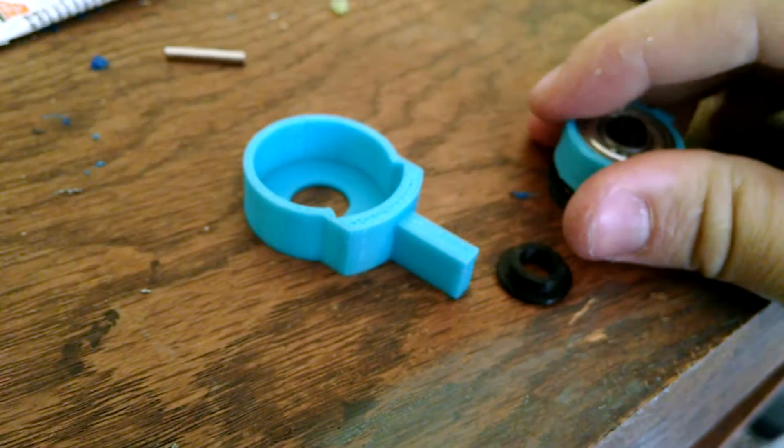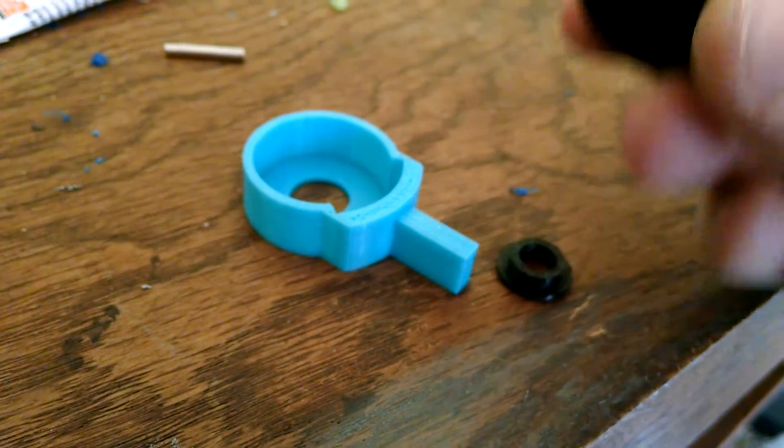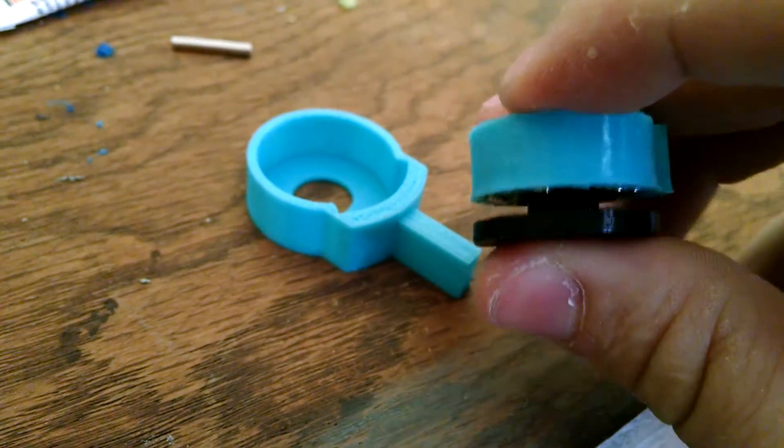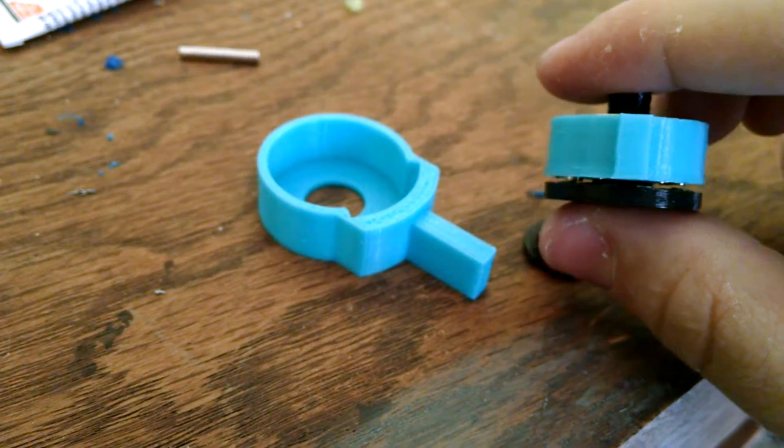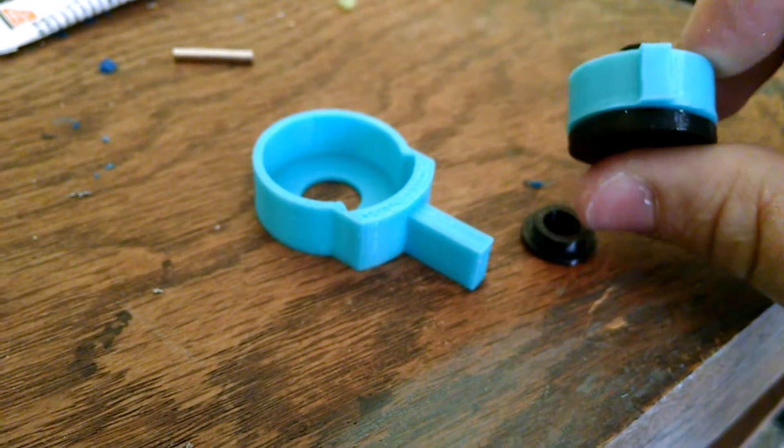which has magnets that repel each other. So these all orient the same way, and then when they come together, they make a very small gap.